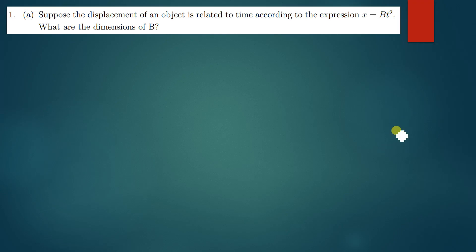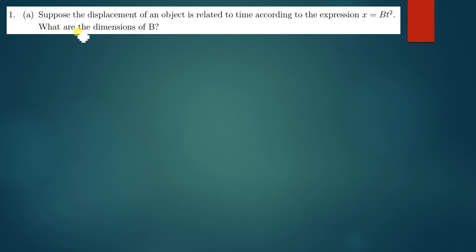The questions we are discussing are very simple. Dimensional analysis on its own is a very simple topic — no one should tell you it's difficult. If you know the basics you can solve any question. The question says: suppose the displacement of an object is related to time according to the expression x equals b t squared. What are the dimensions of b?